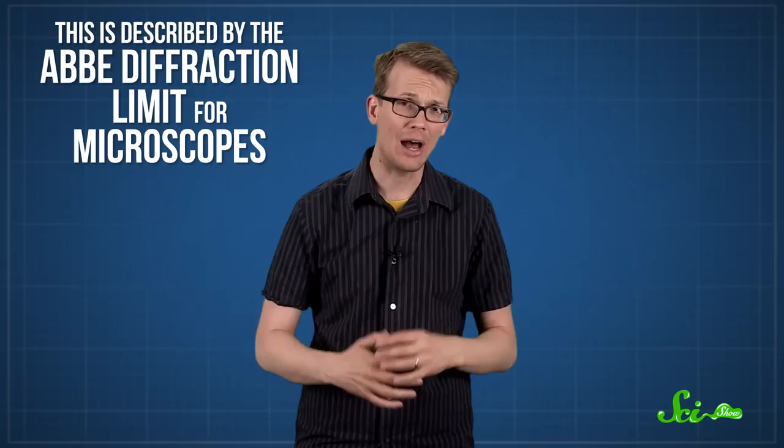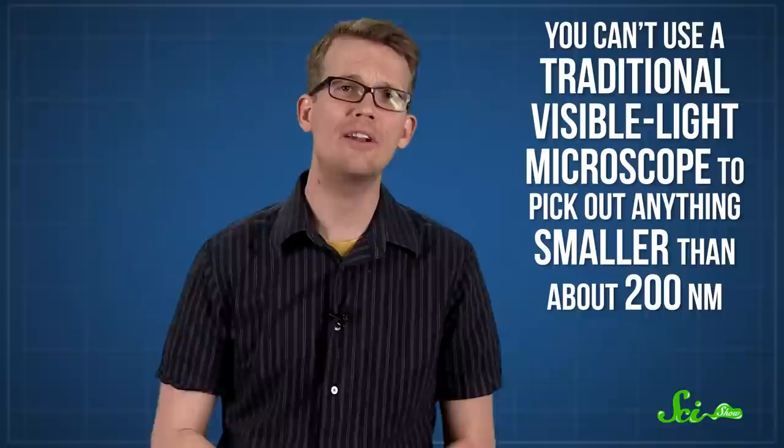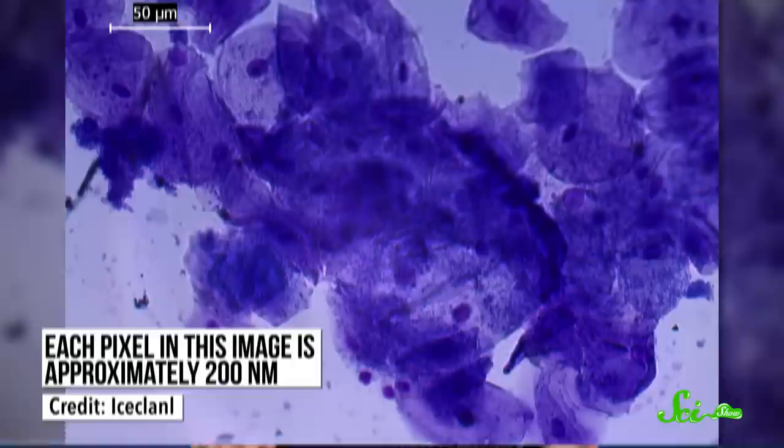So you can't use a traditional visible light microscope to pick out anything smaller than about 200 nanometers, or billionths of a meter. And that's an issue for any scientist who wants to see something really tiny. A biologist, for instance, wouldn't be able to see anything much smaller than the largest structures in a human cell, and biologists really want to know what's going on in there.